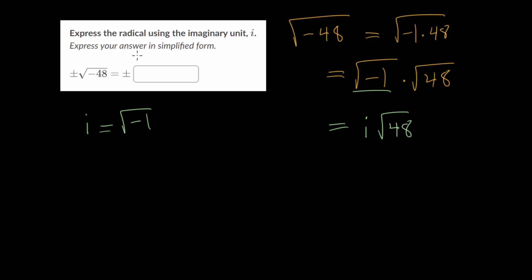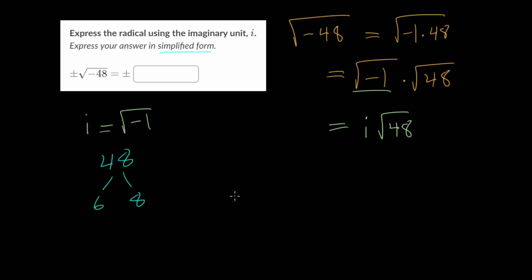At this point we need to express our answer in its most simplified form, so we need to simplify the square root of 48. 48 is not a perfect square — it's not some number squared — so we need to make a factor tree to simplify it. 48 is a product of 6 times 8. You could also use 4 and 12 or another pair; my advice is to just use the two numbers that come to your mind first.